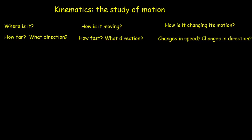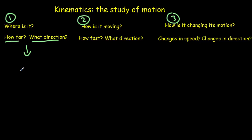If we're going to describe what the objects are doing in terms of their motion, we need to talk about: 1. Where is it? 2. How is it moving? 3. How is it changing that motion? To describe where it is, we need to know how far away and in what direction. The three basic concepts we need here are position, displacement, and distance.